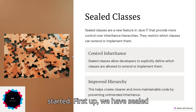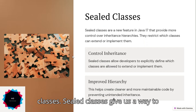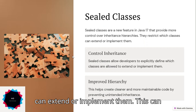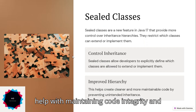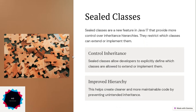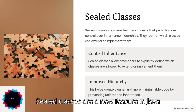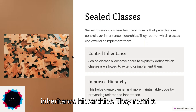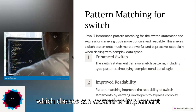First up, we have sealed classes. Sealed classes give us a way to control which other classes or interfaces can extend or implement them. This can help with maintaining code integrity and making our hierarchies more predictable. Sealed classes are a new feature in Java 17 that provide more control over inheritance hierarchies by restricting which classes can extend or implement them.